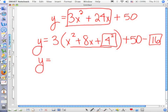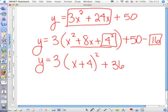So now, I still have y. I still have 3. This can be factored to x plus 4 squared. And now, when I add plus 50 minus 16, I get plus 34.